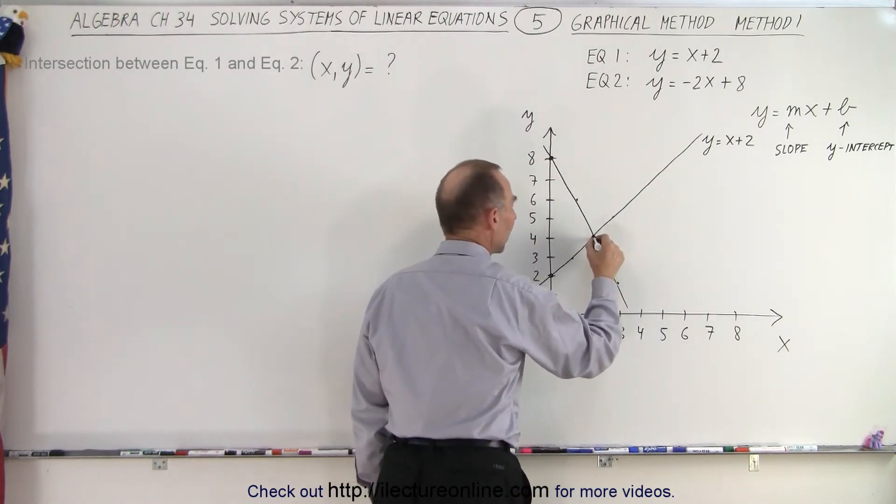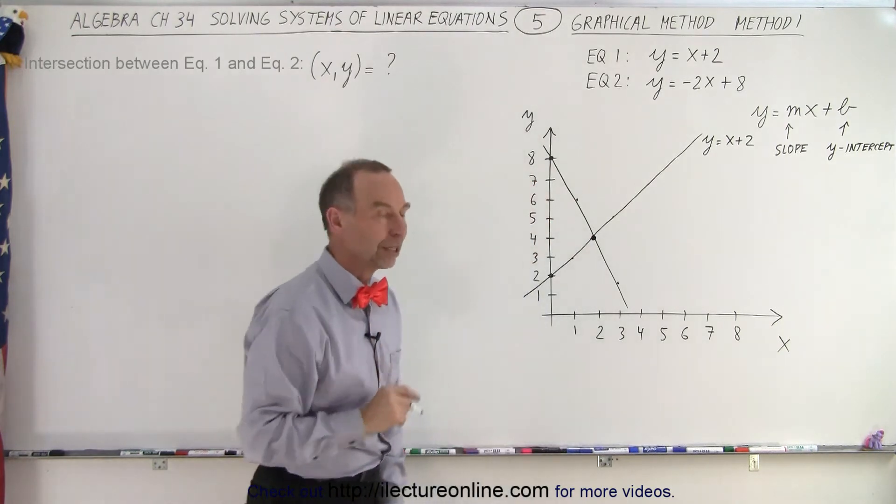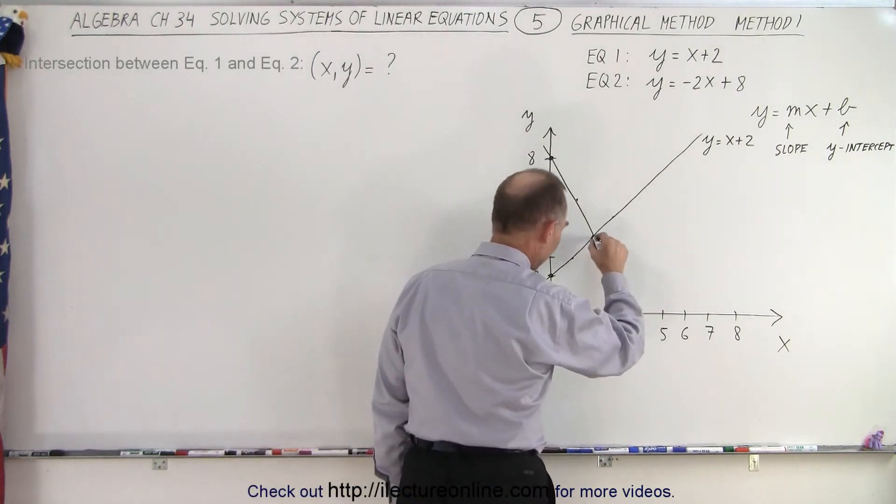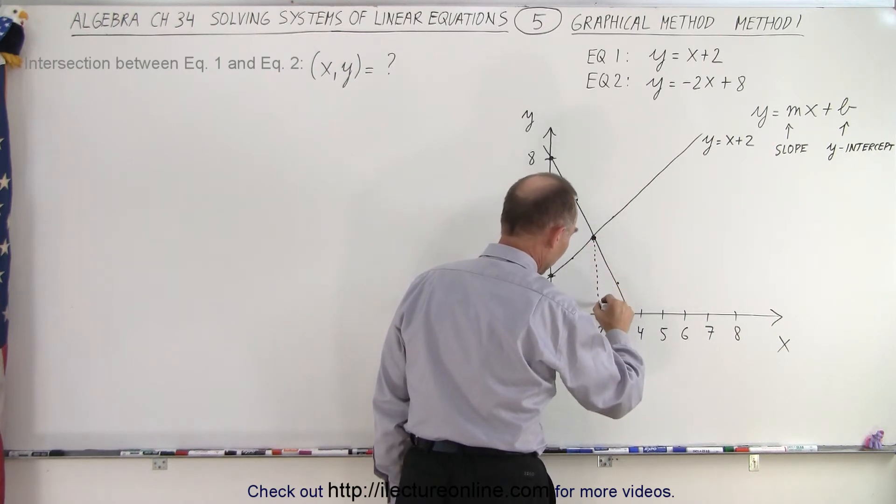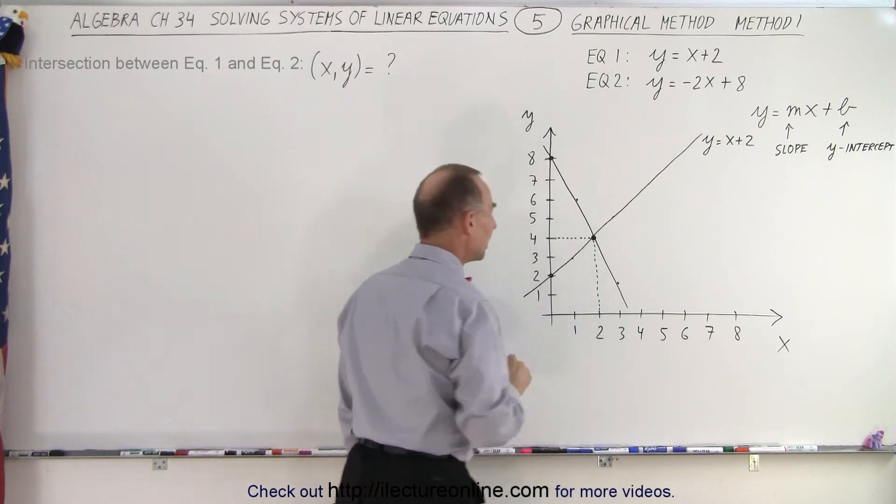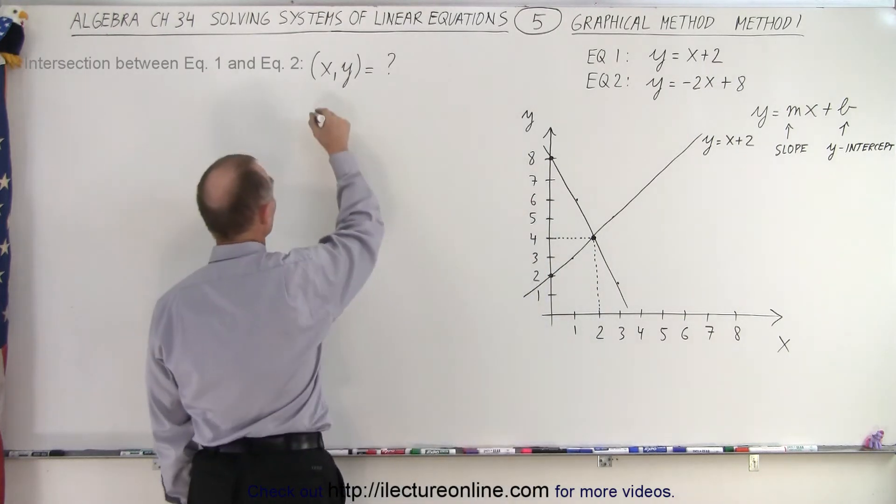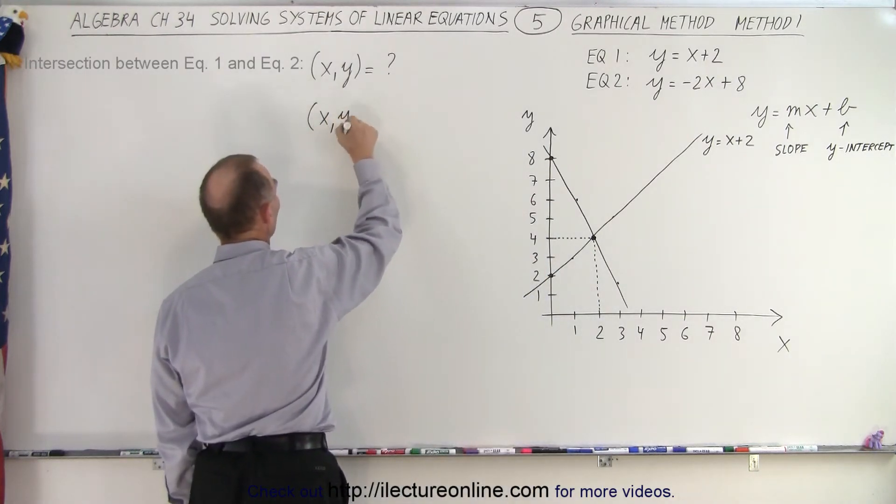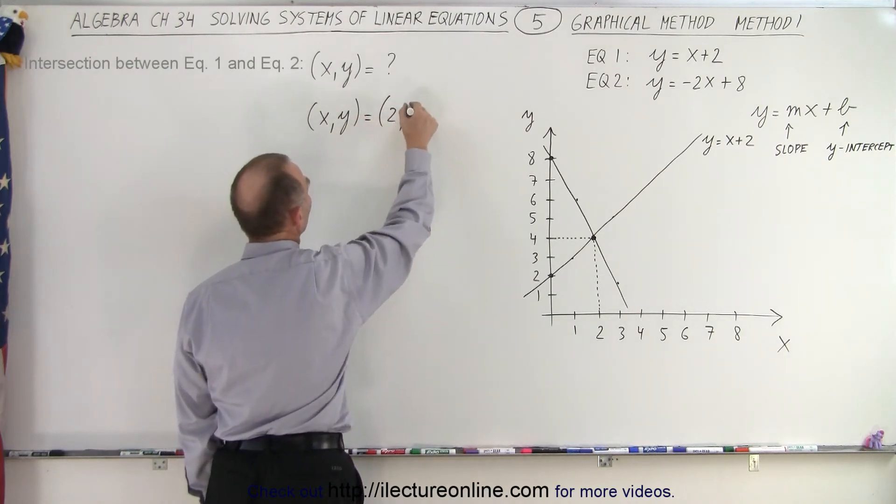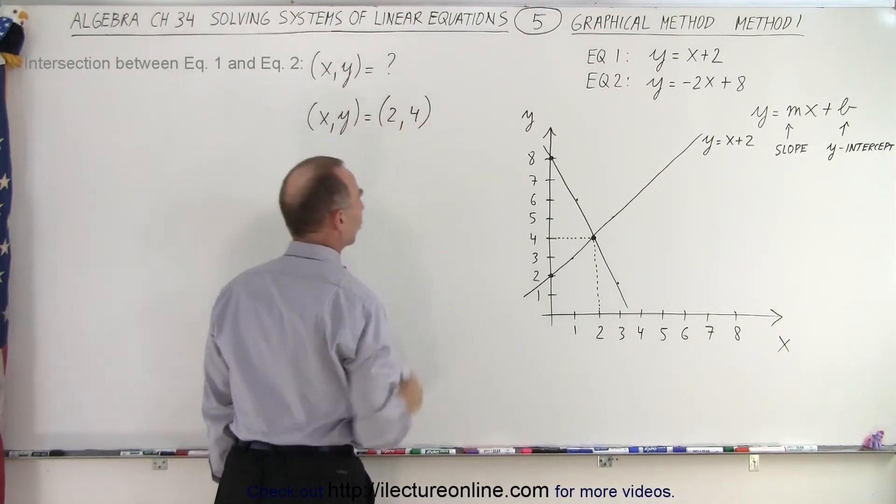Well, that is the point of intersection. And let's see what value for x we get. We get x equals 2. And the value for y, we get y equals 4. So the solution is that the x and y coordinates of the point where they intersect is 2 for x and 4 for y.